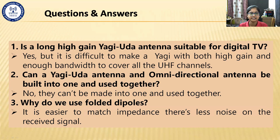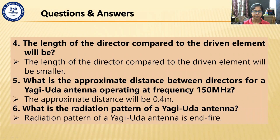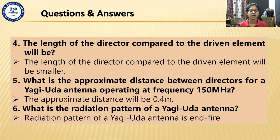Question 3: Why do we use folded dipoles? It is easier to match impedance, and there is less noise on the received signal. Question 4: The length of the director compared to the driven element will be smaller — it is less than the driven element and shorter than half the wavelength of the dipole. Question 5: What is the approximate distance between directors for a Yagi-Uda antenna operating at 150 MHz? The approximate distance will be 0.4 meters, based on mathematical calculation. Question 6: What is the radiation pattern of a Yagi-Uda antenna? The radiation pattern is end-fire.